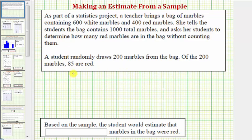Because 85 out of 200 marbles from the sample were red, the fraction of marbles that were red is 85/200. Notice how this fraction simplifies. There's a common factor of five between 85 and 200. If we divide both the numerator and denominator by five, 85 divided by five equals 17, and 200 divided by five equals 40.